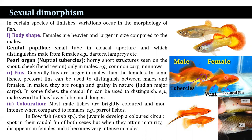The fins: generally fins are larger in males in comparison to females. In some fishes, the pectoral fins can be used to distinguish between males and females — in males they are rough and grainy in nature, and this is best developed in the breeding season of Indian major carp. In some fishes, the caudal fins can be used to distinguish — in the case of the shark tail, the lower lobe is much longer in the male fish.